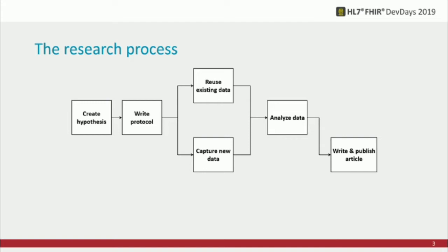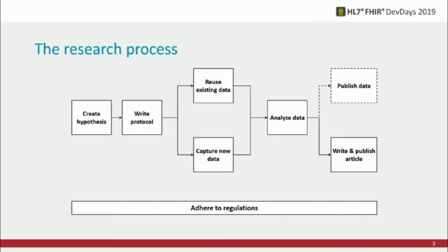You write up the results in a scientific paper, submit it to the highest ranked journal you can find, get declined, rewrite it, go to a lower ranked journal until you finally get published. And if you're a good researcher, you'd also like to publish your data so people can validate that the research was scientifically sound. You also have to adhere to regulations from the start to the finish.